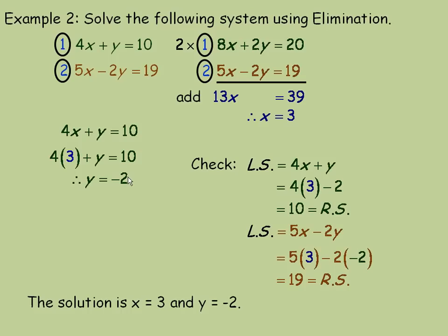Once again, similar to one of the earlier lessons, that means that if we were to graph this line and this line, they should intersect at the point 3 comma negative 2. And that's the end of the lesson.